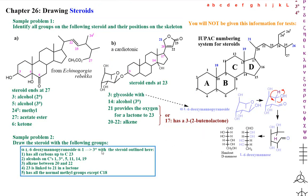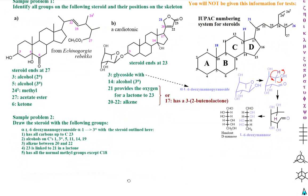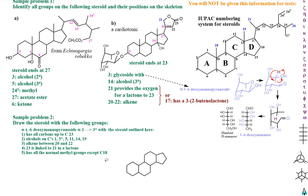We have to draw a steroid that's got all of these features. First, draw a steroid: Ring A, Ring B, Ring C, Ring D. There's going to be a linkage from C1 to C3 with the L-6-deoxymannopyranoside — we already have that from our previous question. So on carbon 3, we've got that group.